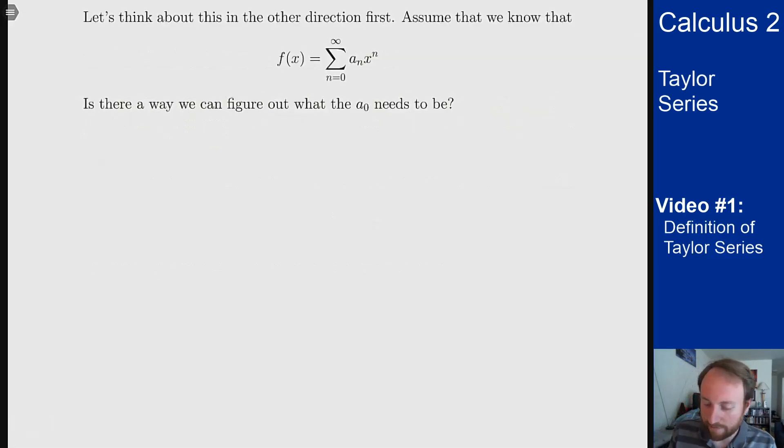So if I start with the power series here where I assume my function f of x that I have and that I know equals this power series sum from zero to infinity of a_n x to the n, is there a way that I can determine what a_0 has to be?